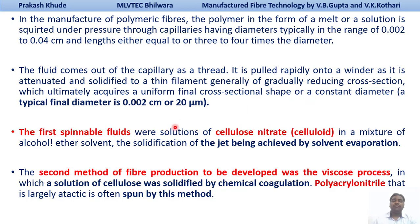The first spinnable fluid which was manufactured was cellulose nitrate. A solution of cellulose nitrate — normally called cellulite — was made in a mixture of alcohol as solvent, and solidification of the jet was achieved by solvent evaporation techniques. So the first spinnable liquid that was developed and spun was cellulose nitrate.